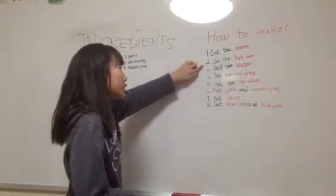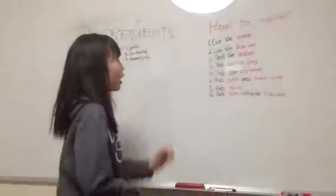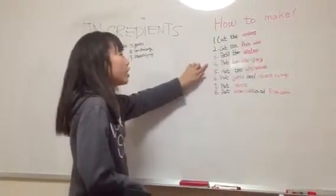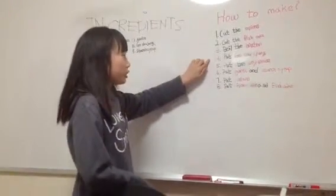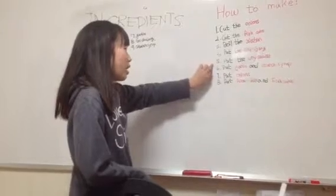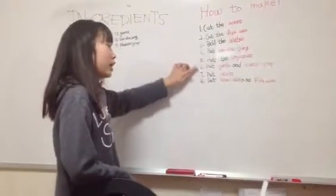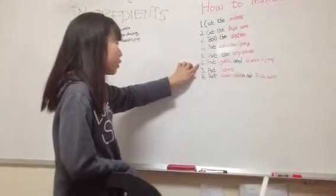While we prepare, we have to boil the water. In the water, we put gochujang, soy sauce, garlic, and starch syrup together.